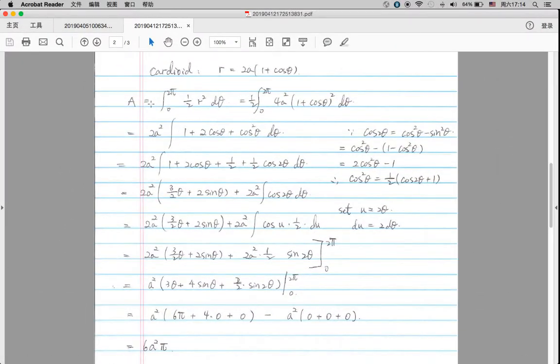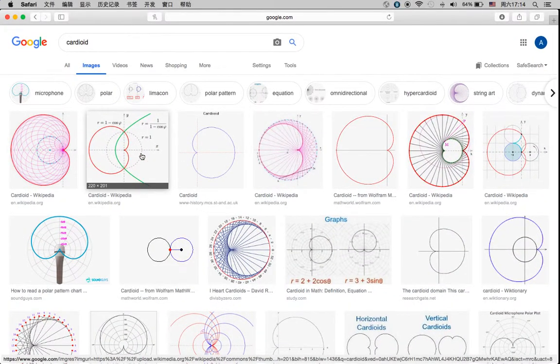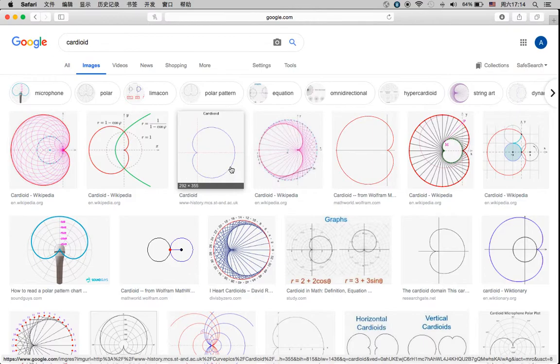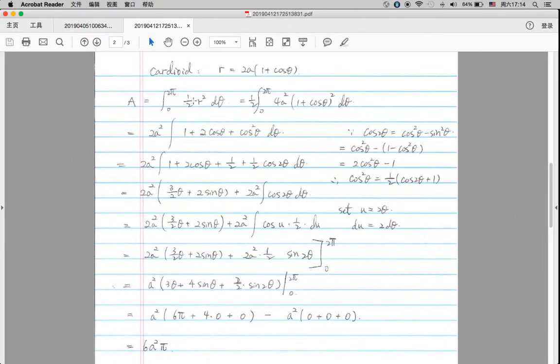And the area of a cardioid is by taking the integral from 0 to 2 pi, basically just drawing a circle. And the formula is 1 half multiplied by r squared, where r is the function that defines a cardioid.